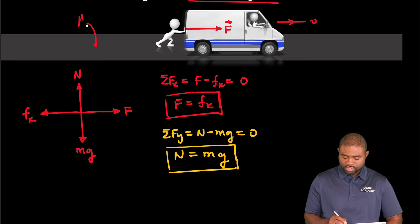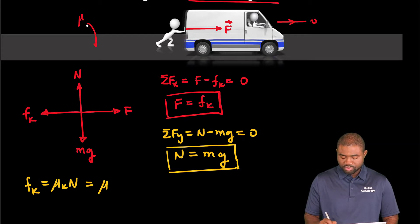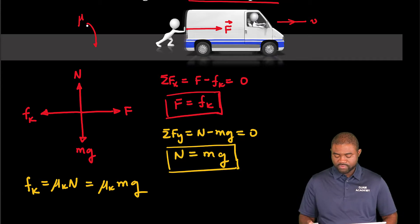Now the good news is that by definition, the kinetic friction Fk is just going to be equal to μk multiplied by N, which is equal to μk mg. Remember μk is the coefficient of kinetic friction between the wheels of the car and the road.